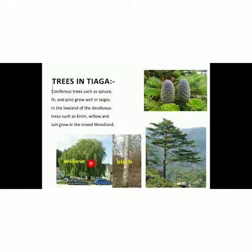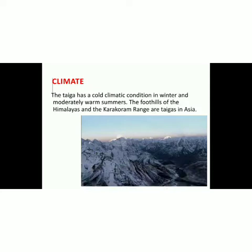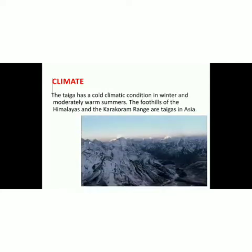As you can see in the picture, there is willow, birch, pine and other examples. The climate in taiga is really cold with moderately warm summers. The foothills of the Himalayas and the Karakoram range in Asia are examples of taigas.